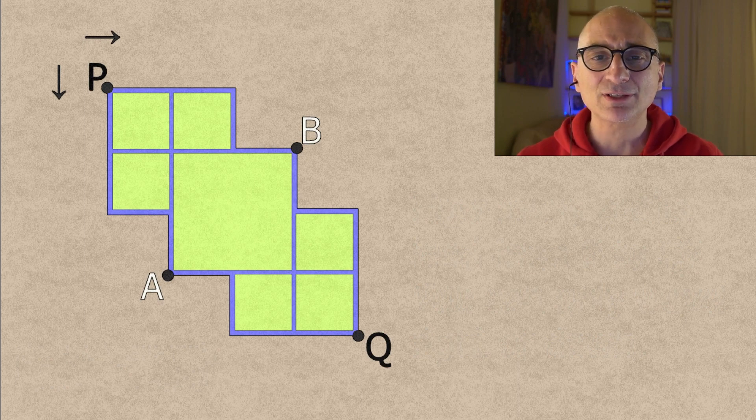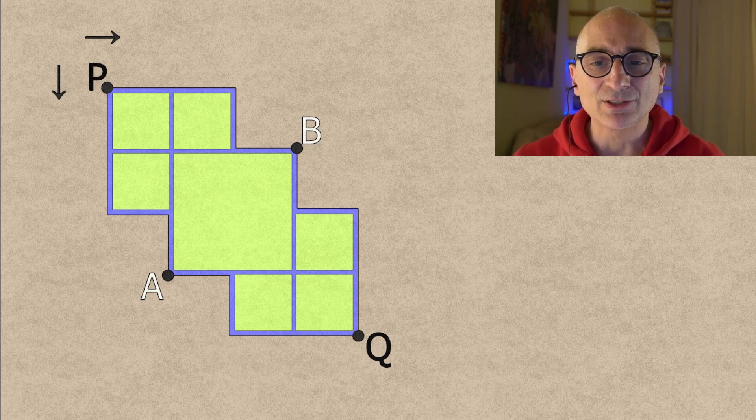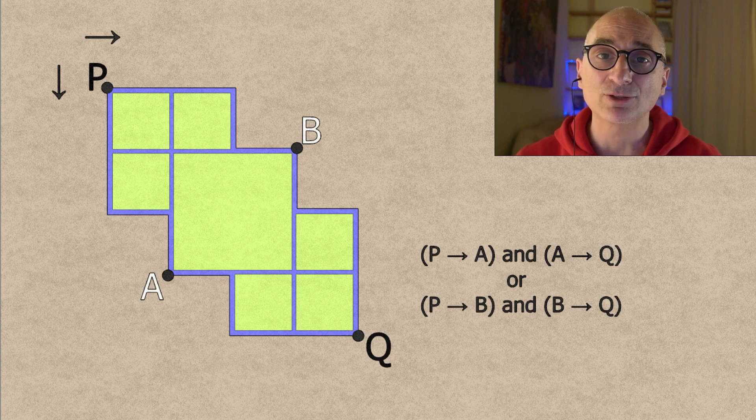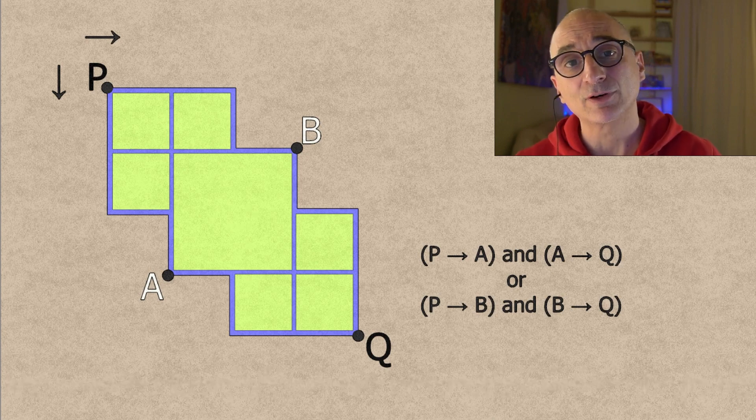And for the solution consider the points A and B, and so now you can clearly see that to go from P to Q you can go from P to A and then from A to Q, or you can go from P to B and then from B to Q.